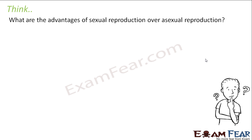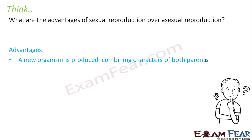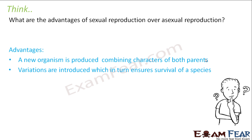What are the advantages of sexual reproduction over asexual reproduction? One important thing in sexual reproduction is variation, and variation plays a very significant role in the long run — it is one of the most important advantages. A new organism is produced combining characters of both parents. In asexual reproduction, the new organism is exactly identical to the parent. But in sexual reproduction, the new organism will have traits of both parents plus some new characters — that is, variations are introduced, which in turn ensures survival of species.